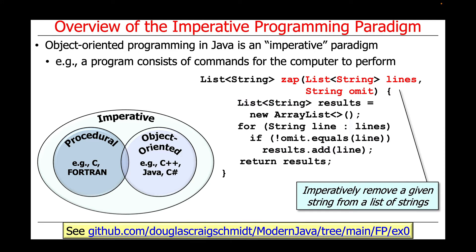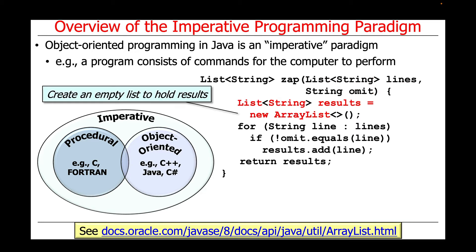Here's a simple example that illustrates the use of imperative programming in Java. If you take a look at the link at the bottom of this slide, you can get access to the source code for this example. This example is a method called zap, which is going to imperatively remove a given string called omit from a list of strings called lines. The very first thing we do when we come into the zap method is we create an empty ArrayList to hold the results.